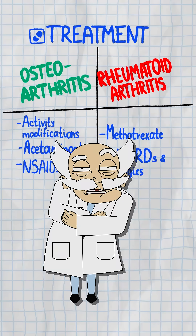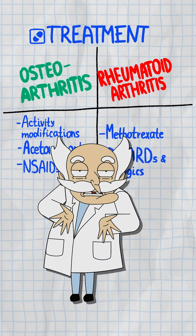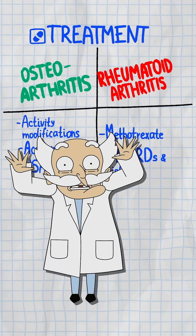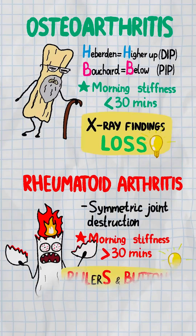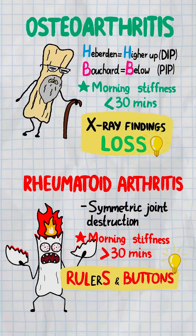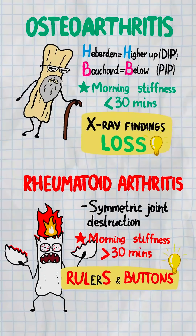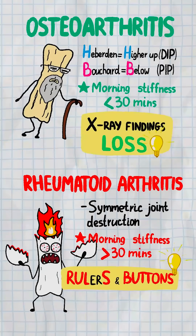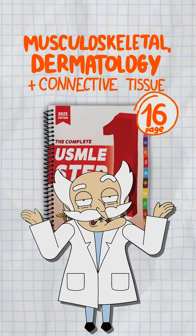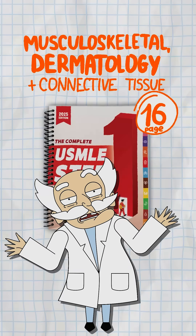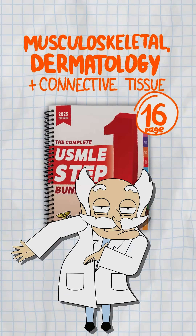Throw the immunologic kitchen sink at it before it eats another knuckle. One's from mileage, the other's from mayhem. Confuse them on step and you'll be diagnosing yourself with career-ending status. Follow now before your brain degenerates faster than a rheumatoid wrist.